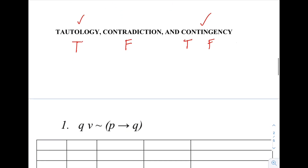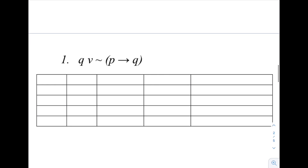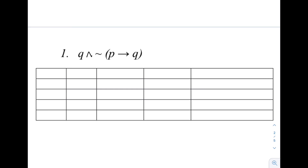Let's work on example number one. We will construct a truth table and determine whether the compound proposition is a tautology, contradiction, or contingency. As you notice, we only have two statements, P and Q. Our first step is to write all the possible combinations of truth values for P and Q. For P, the first two rows are true and the last two rows are false. For Q, the pattern is true, false, true, false.